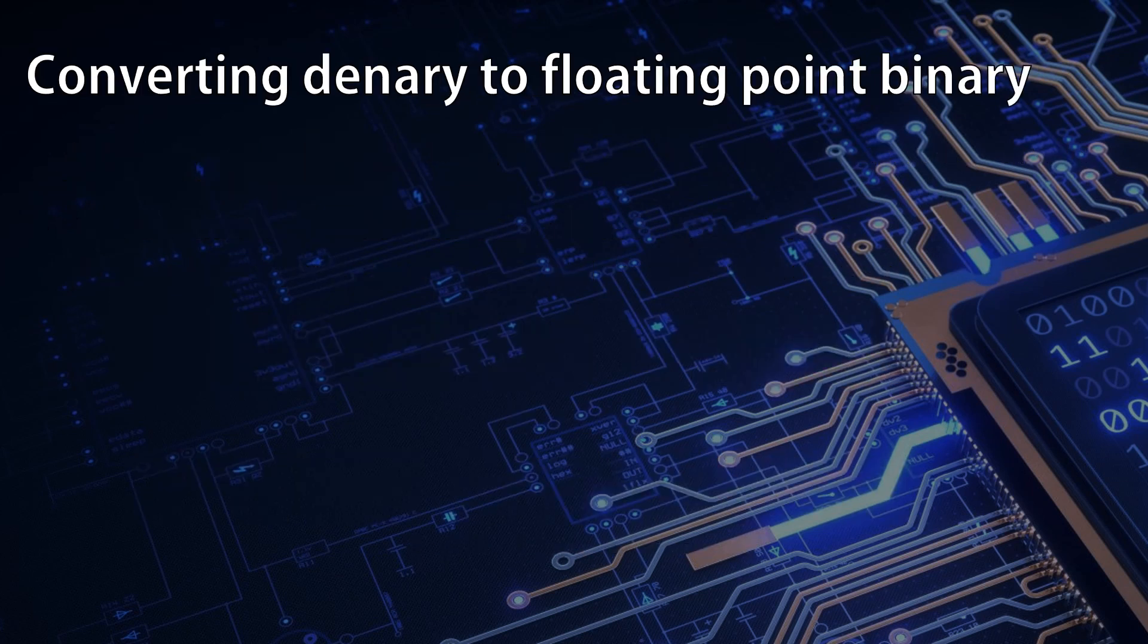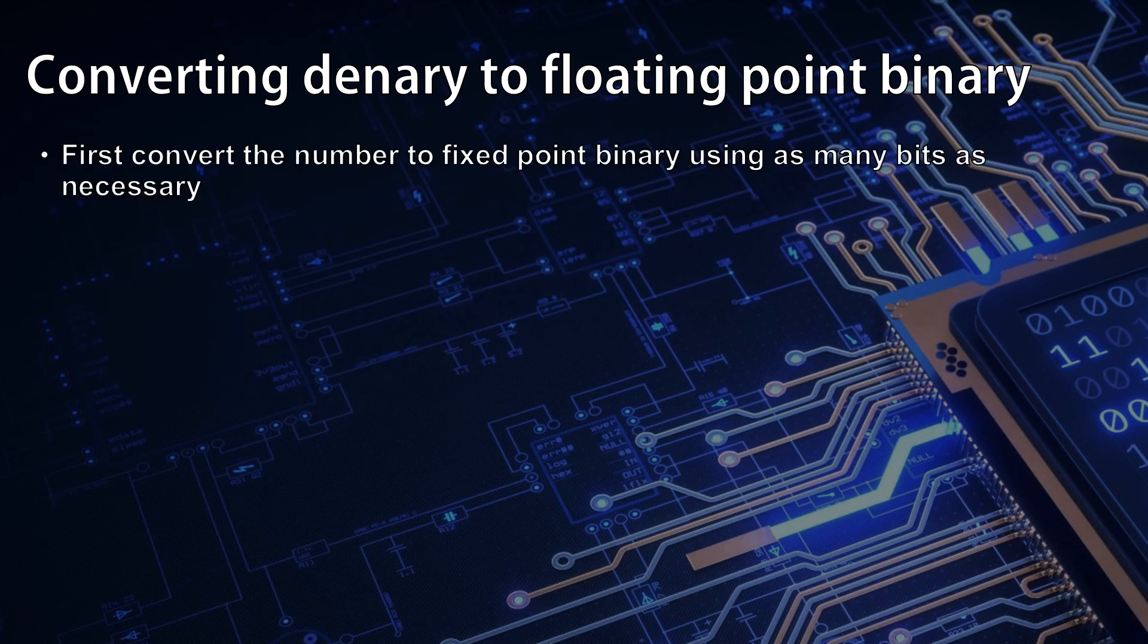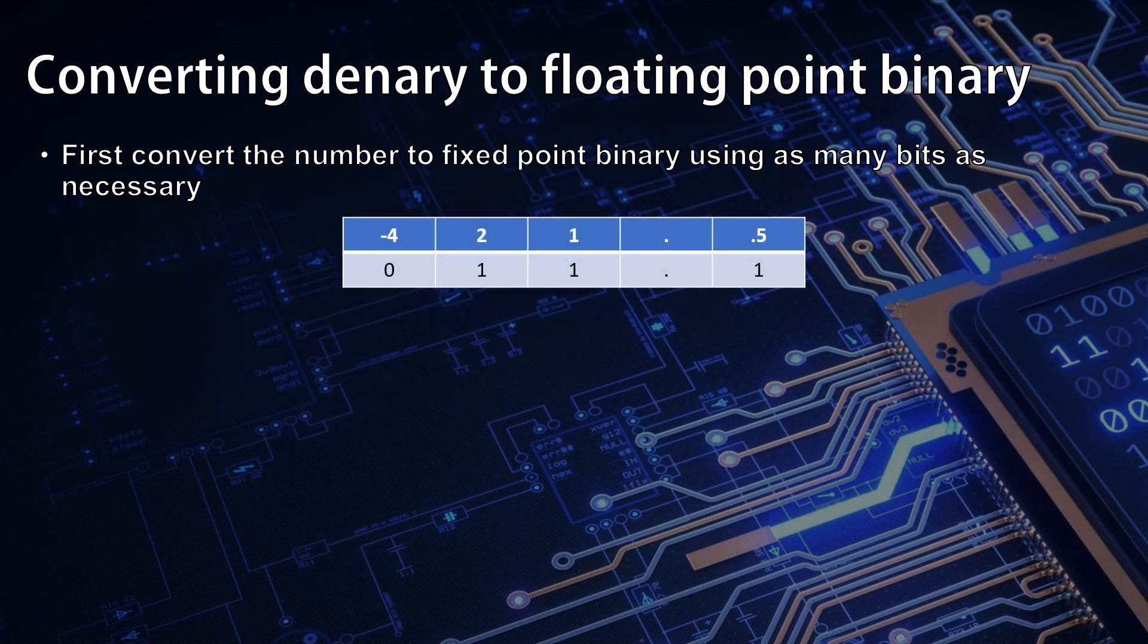If you're trying to convert from denary to floating point binary we do it in a couple of steps. The first is to convert the number to fixed point two's complement binary using as many bits as necessary. Here in this example we're doing the number 3.5 which would need four bits. Although I show a column for the decimal place it's just there decoratively to make it easier to understand what's happening. Next we shift the bits so that one is the most significant bit.